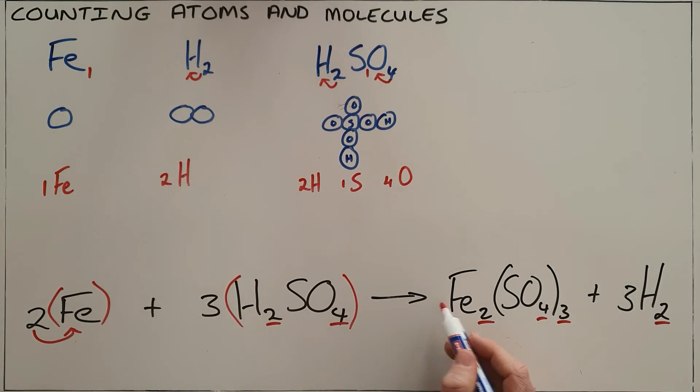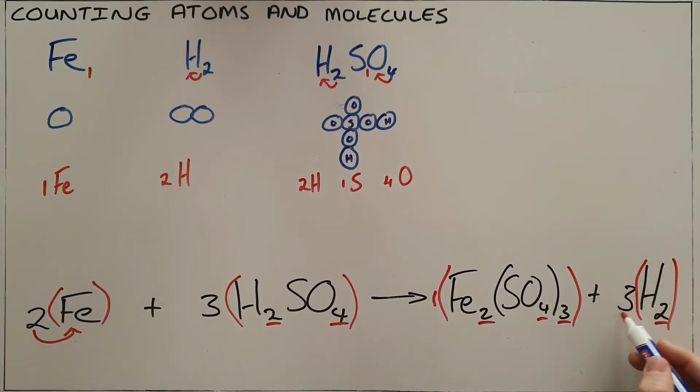Again, if there is no number present, then we assume that means there is a one there, telling us there is one iron sulfate molecule. And this three over here tells us that there are three hydrogen molecules present, which then tells us that technically there are three diatomic hydrogen molecules, which means there are then six hydrogen atoms.